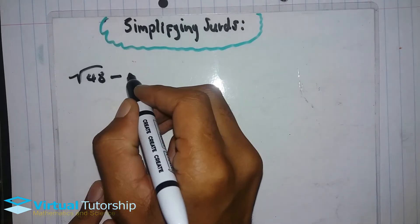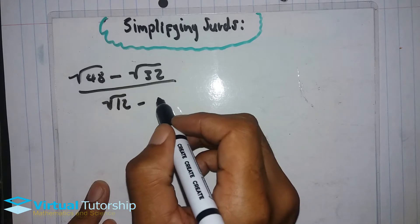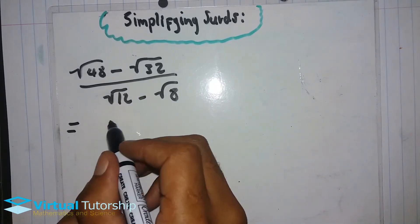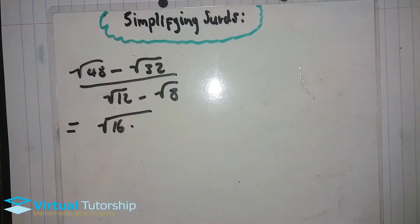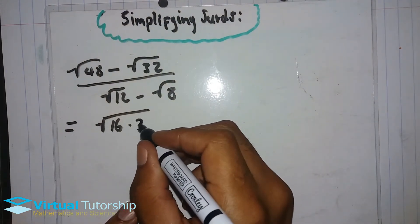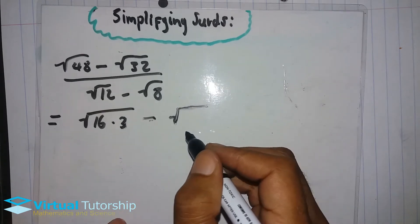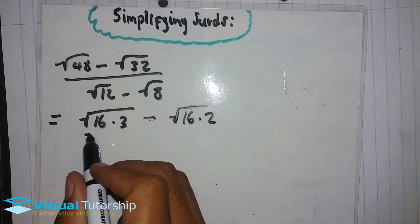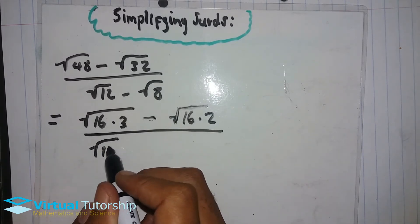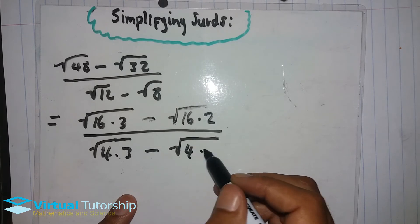Next example: square root of 48 minus square root of 32 over square root of 12 minus square root of 8. Square root of 48 is square root of 16 times 3 minus the square root of 32, which is square root of 16 times 2, over square root of 12, which is 4 times 3, minus square root of 8, which is 4 times 2.